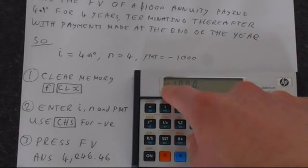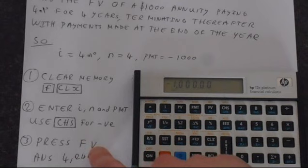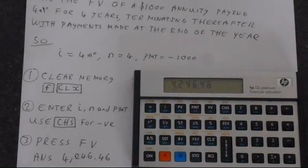We now have all the information needed. So to do the calculation, we simply press future value, which is the FV button. And it does the calculation for us and gives us $4,246.46. And that is the correct answer.